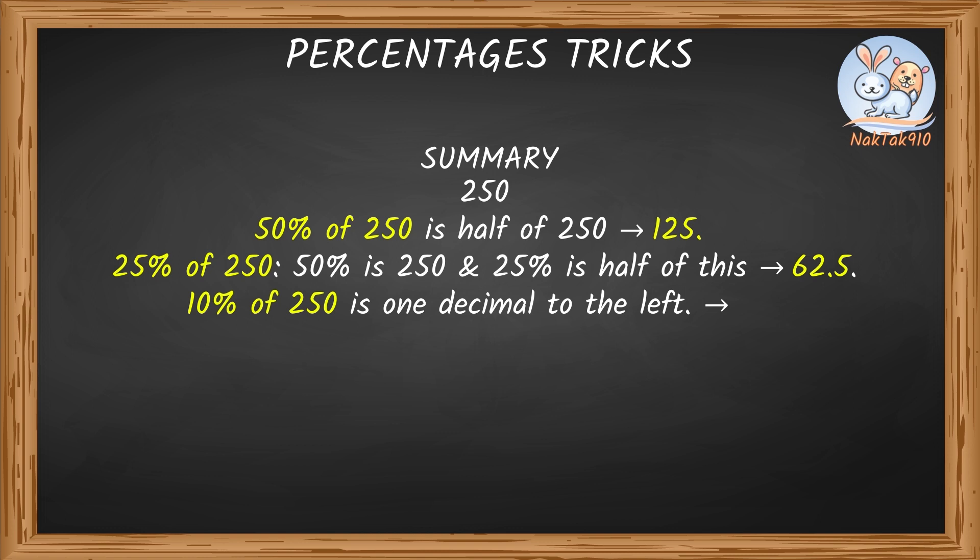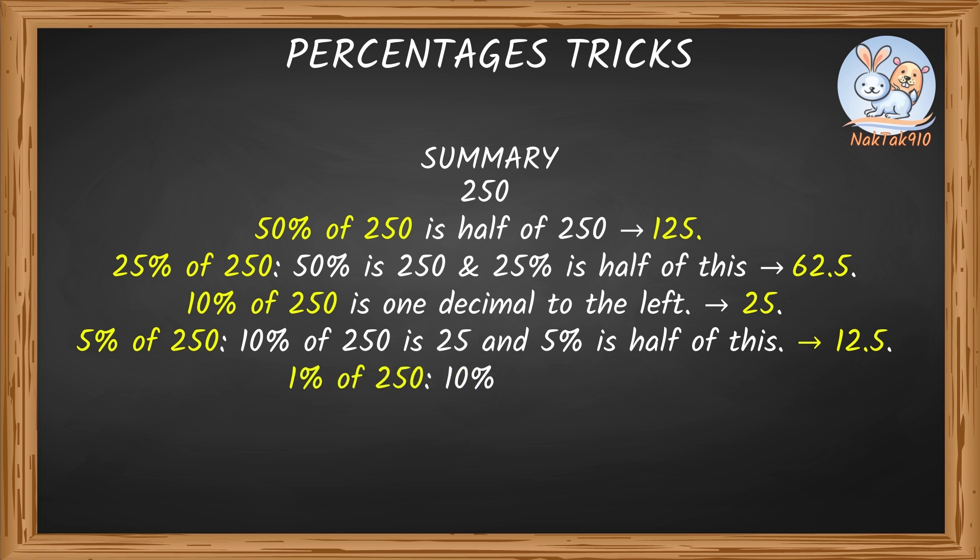10% of 250 is one decimal point to the left. That's 25. 5% of 250. 10% of 250 is 25, and 5% would be half of 25. Let's write 25 as 20 plus 5. Half of 20 is 10, and half of 5 is 2.5. Altogether, 12.5. 5% of 250 is 12.5.